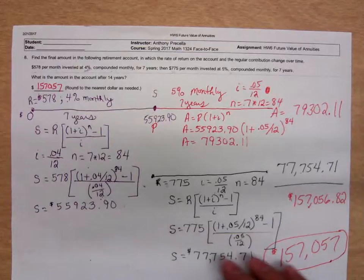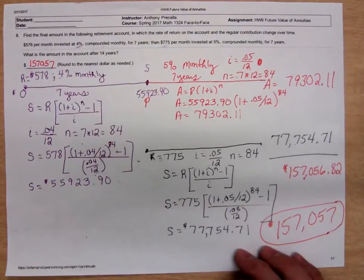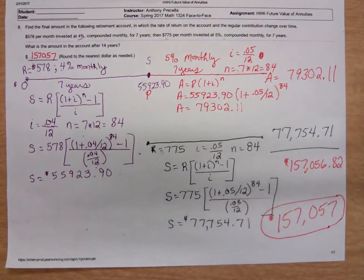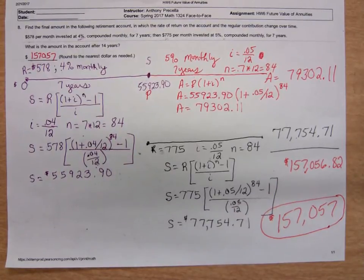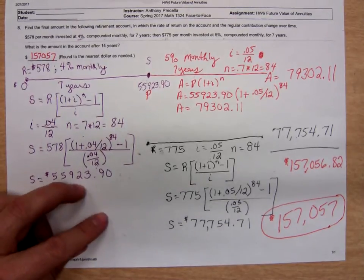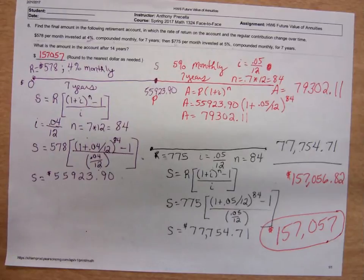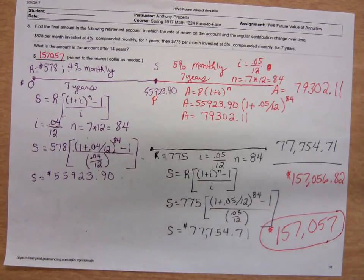S equals R times one plus I to the N minus one all over I. So plug it in. R is $775, bracket, 1 plus I to the N minus one all over I. I'll punch in the top, hit equal or enter, then divided by that bottom, putting that .05 over 12 in parentheses, hit equal or enter, and then multiply by 775. What that will get me is the sum of those 84 deposits of $775. We have $77,754.71. So $77,754.71 plus $79,302.11 gives us $157,056.82. That's the amount that you're going to round to the newest dollar. How would I round that? It'll be $157,057. Any questions? I hate to ask that. Thanks for watching if you watched the video.